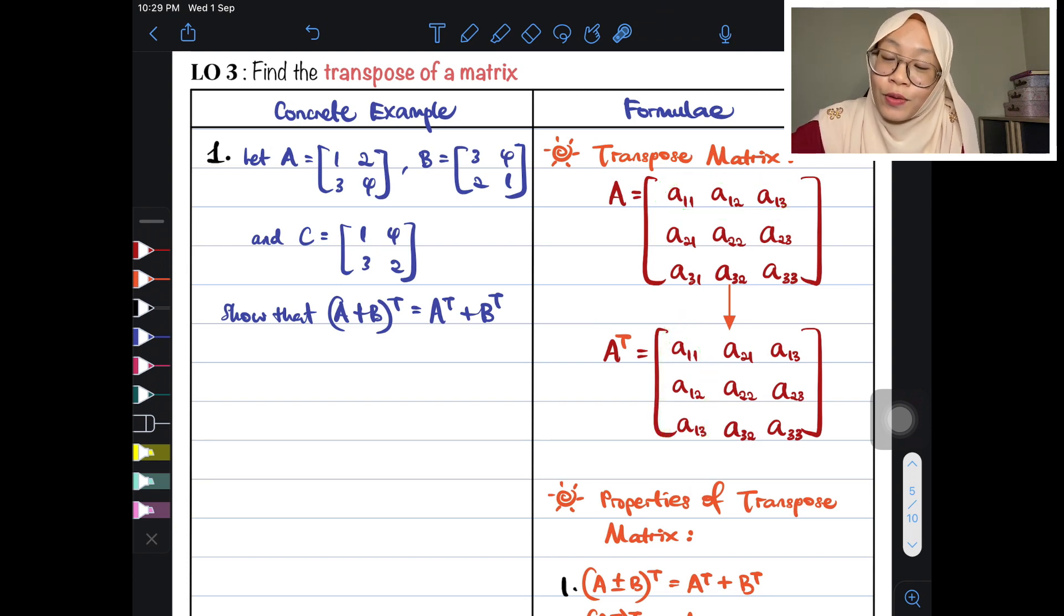Look at the second row. If you look at the second row, it will now become the second column. See? The third row will now become the third column. That is how transpose works.